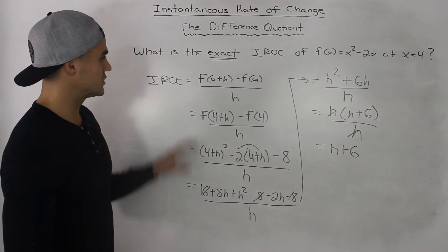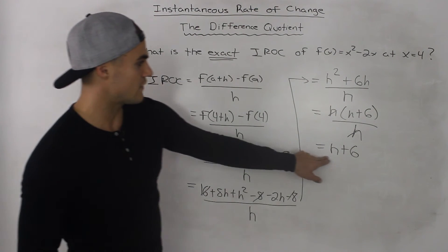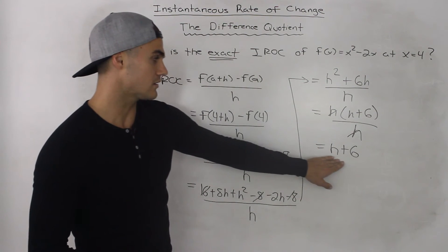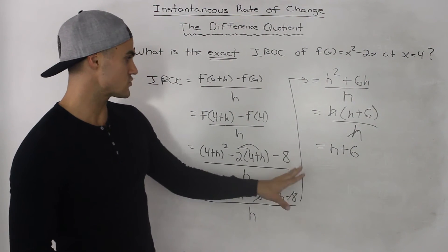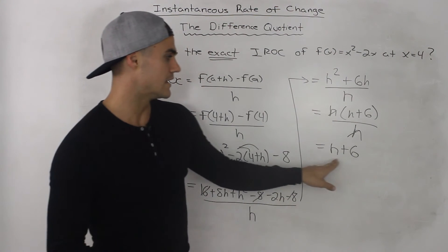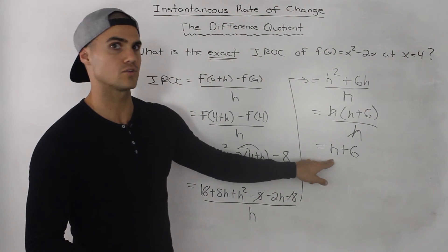So we took the difference quotient, we simplified it, and now we have a general expression for the instantaneous rate of change of this function at an x value of 4, depending on what h value we choose.